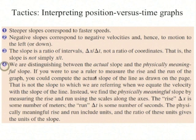We're talking about the physically meaningful slope. It is the rise — which is how far something traveled — divided by the run, which is actually a time interval in seconds. This is not an actual slope in degrees. It's what we call a physically meaningful slope of a position versus time graph, which is an average velocity.